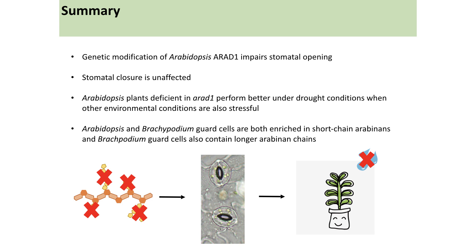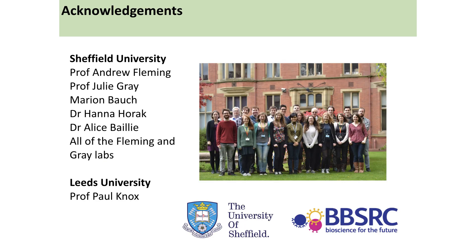In summary: genetic modification of the Arabidopsis ARAD1 gene impairs stomatal opening yet stomatal closure is unaffected. Arabidopsis plants deficient in ARAD1 perform better under drought conditions when other environmental conditions are also stressful. Both Arabidopsis and Brachypodium guard cells are enriched in short chains of arabinan, yet the distribution of longer chains appears to vary between these plant types. Thanks to supervisors Andrew Fleming and Julie Gray, lab members, and Paul Knox from Leeds University who supplied the antibodies.